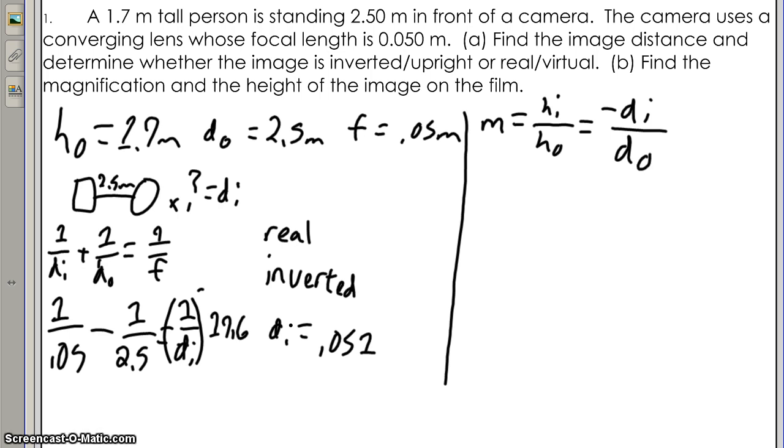So here you can solve the height of the image by cross-multiplying the two equations, which will be height of the image multiplied by the distance of the object, which is 2.5, and it is equal to the negative distance of the image, which is 0.051, multiplied by the height of the object, which is 1.7 meters.